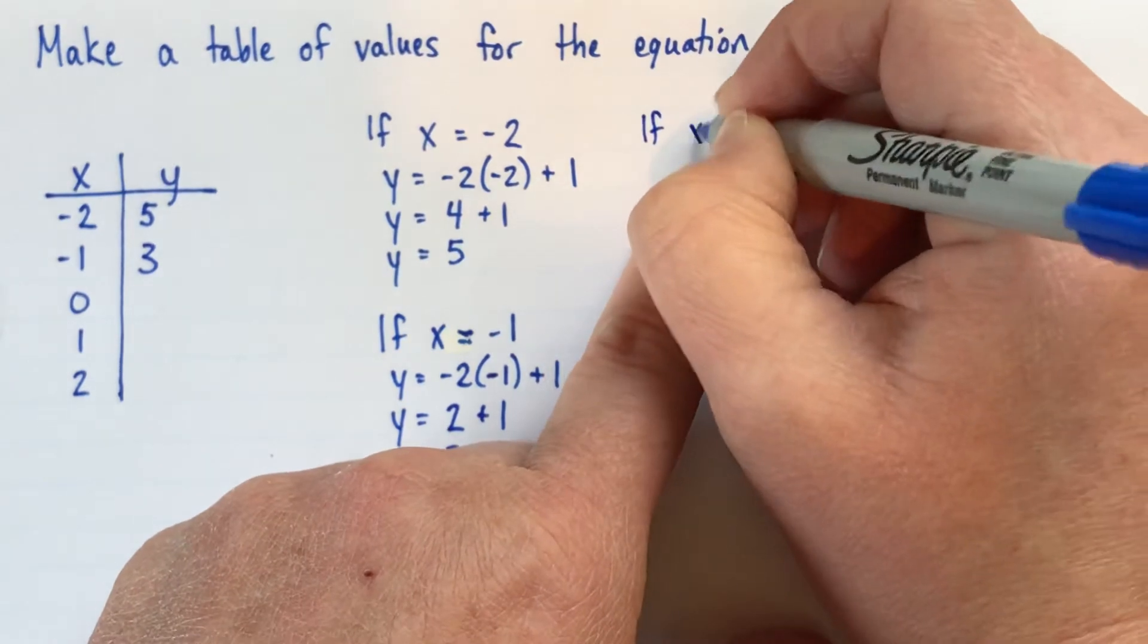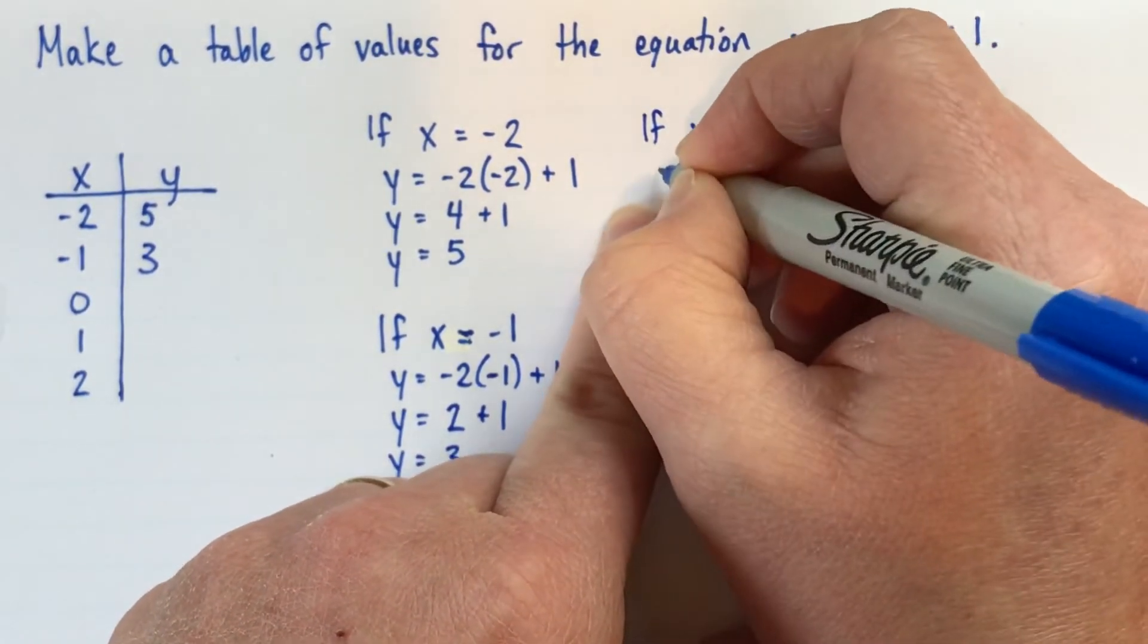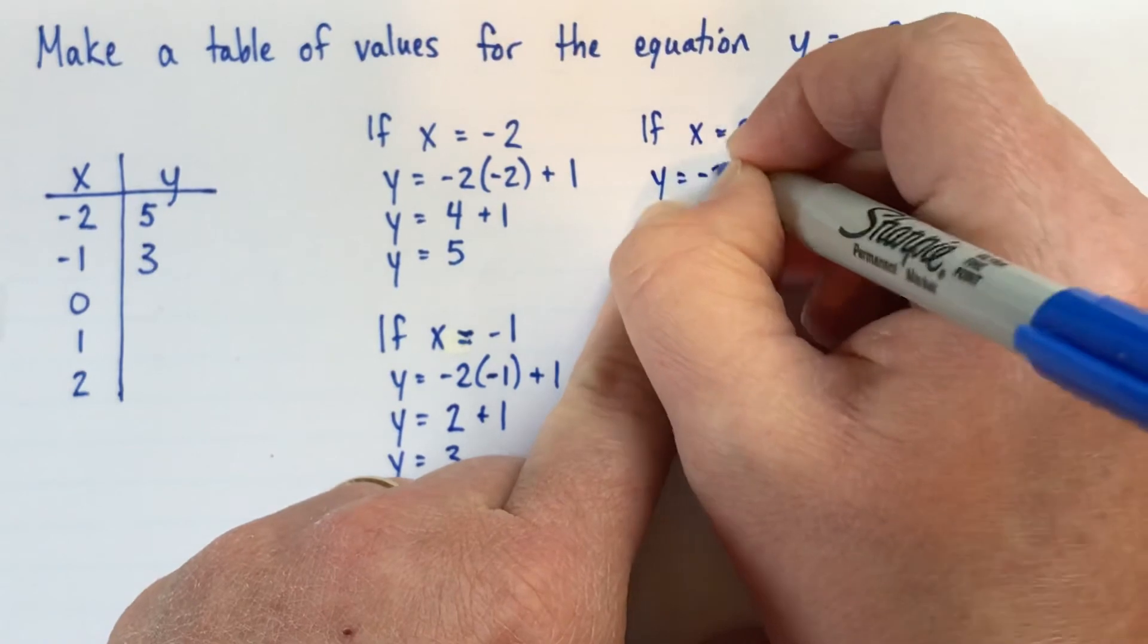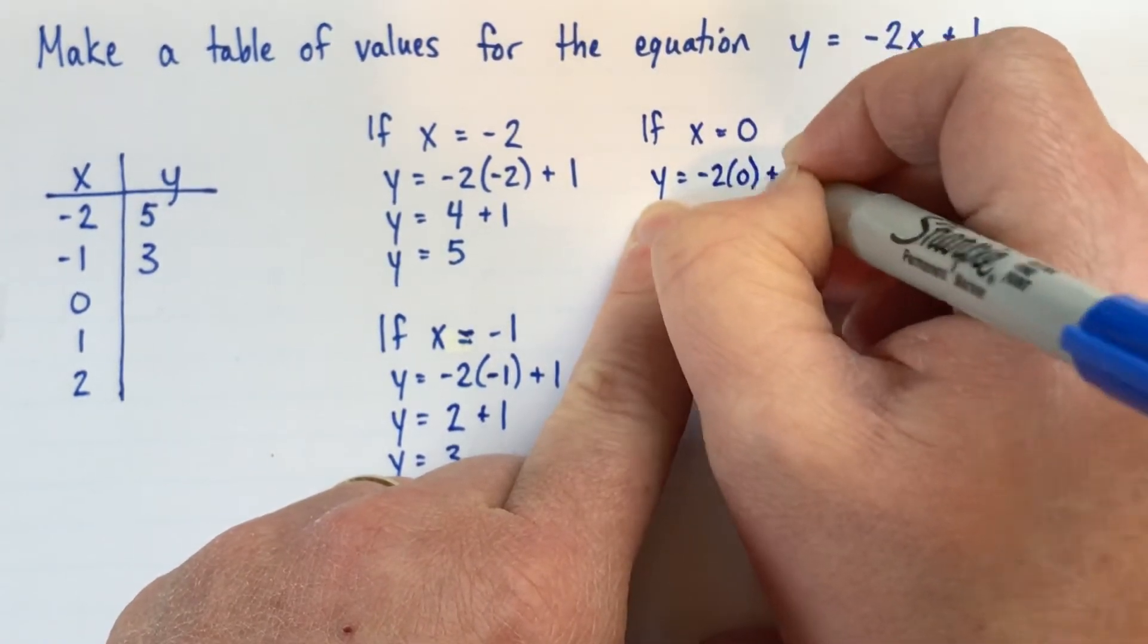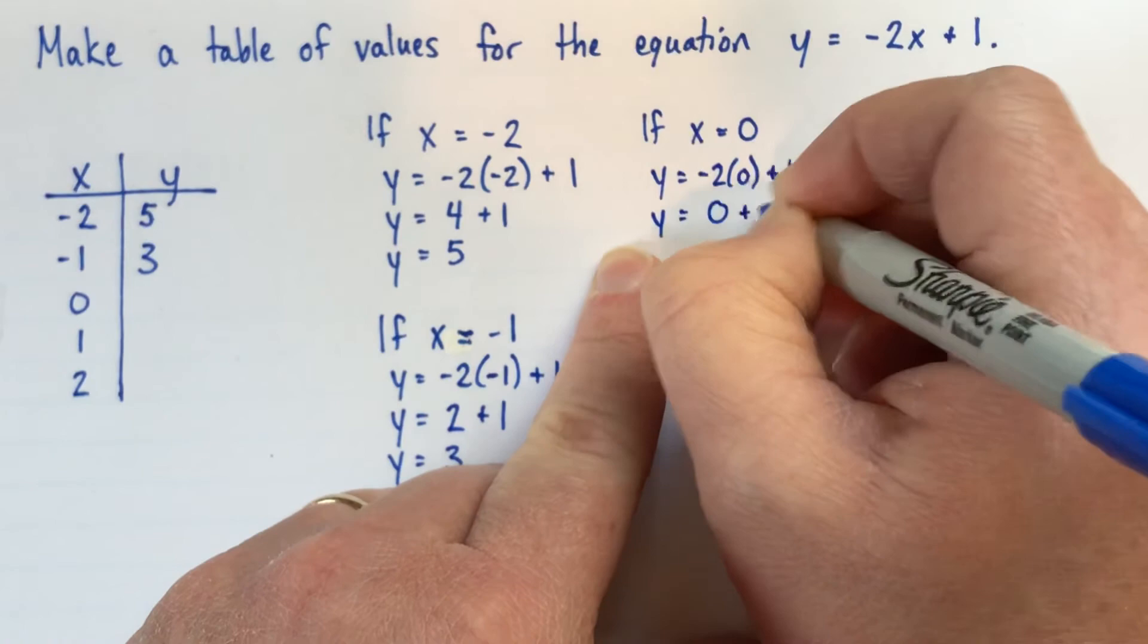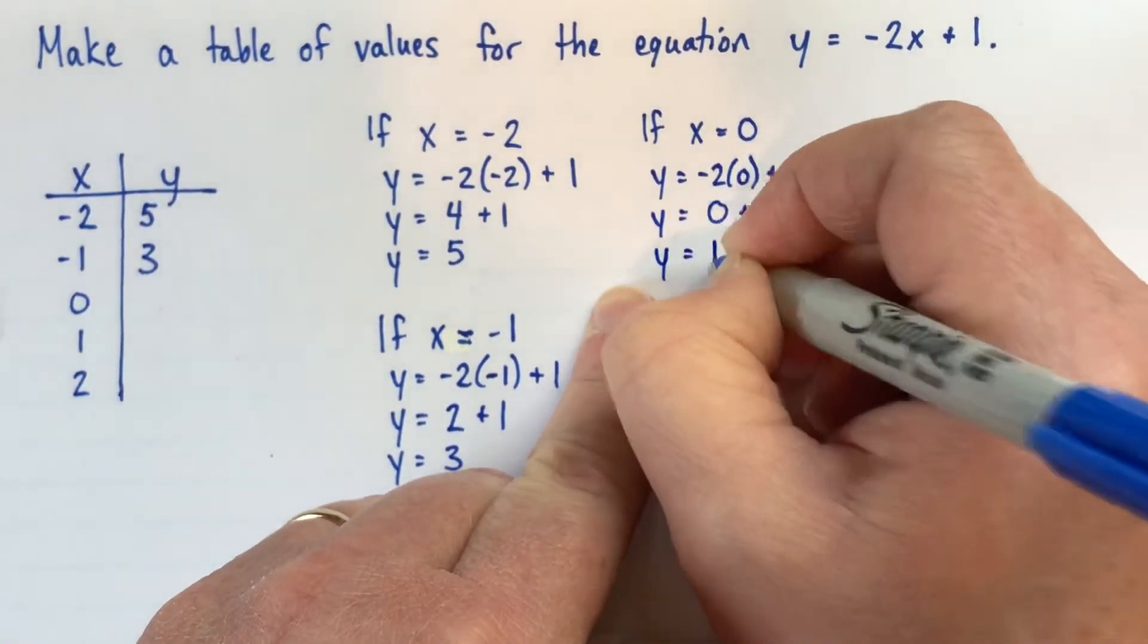If x is equal to 0, this one's always a quick calculation. y is equal to negative 2 times 0, plus 1. So that's 0 plus 1, so that's 1.